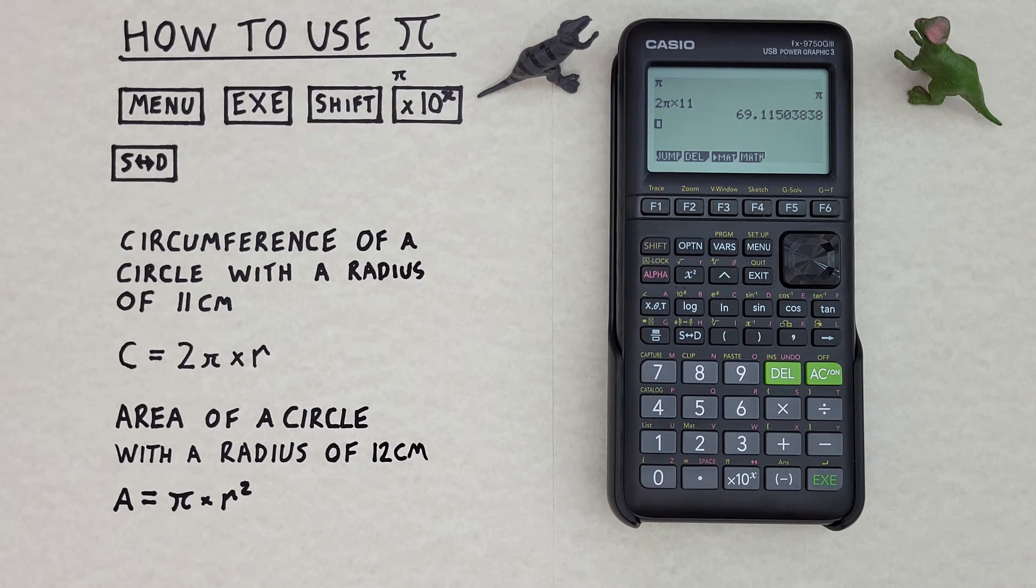We can also use Pi to determine the area of a circle. For example, the area of a circle with a radius of 12 cm. We know we need to use this formula here. Area equals Pi times R squared.